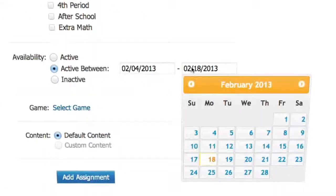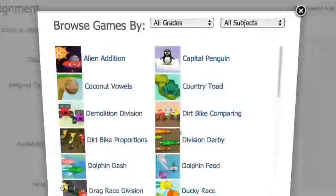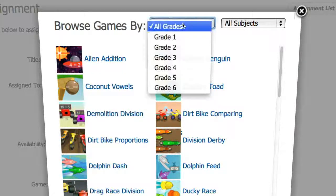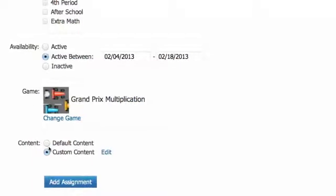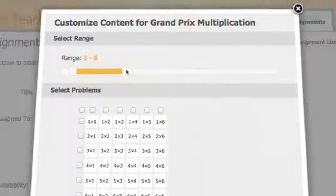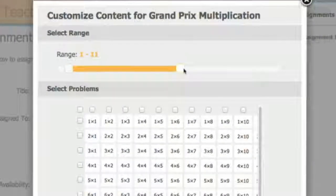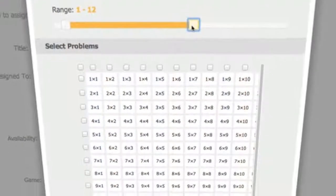Next, select when you want the game to be available. We'll make it available for two weeks. Then choose the game content. You can filter the games by grade or subject. Now we will choose custom content to select which problems will appear in the game. You can set a range of problems for your students to work on.